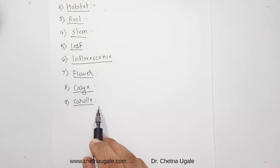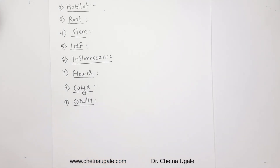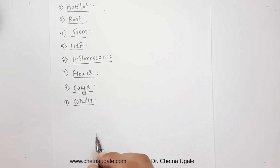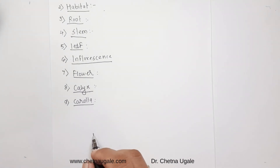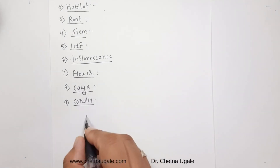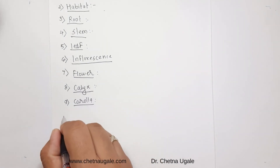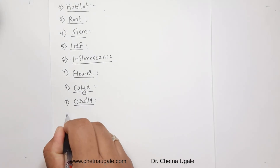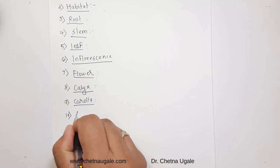The next one is the corolla, which is represented by the petals. We note the number of petals, whether it is gamopetalous or polypetalous — that is the cohesion — then adhesion, aestivation, shape, color, and any modification.